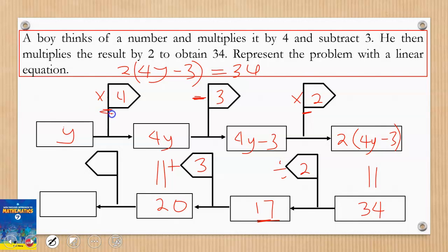Then here we saw multiplication by 4, so we're going to divide by 4. Divide 20 by 4, we have 5. Therefore, y = 5. This is how we use flag diagrams to solve linear equations.